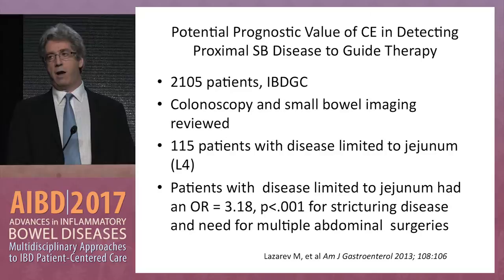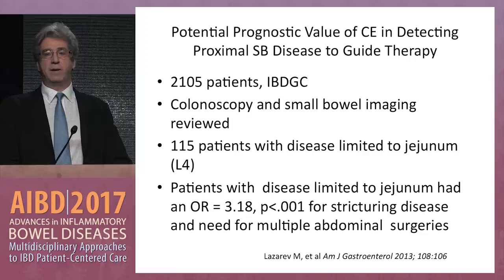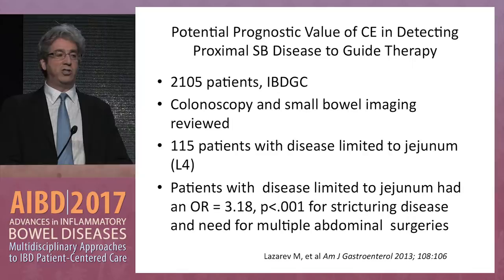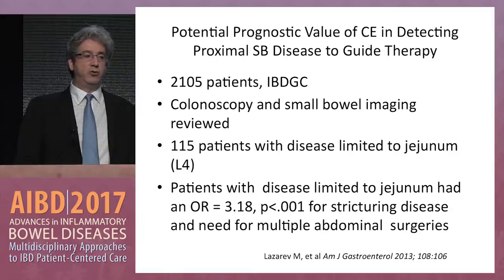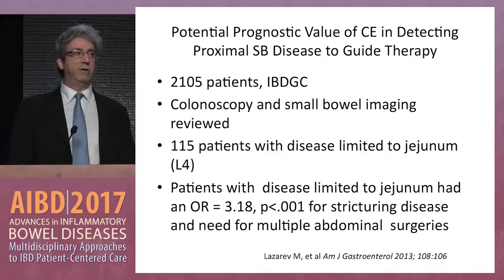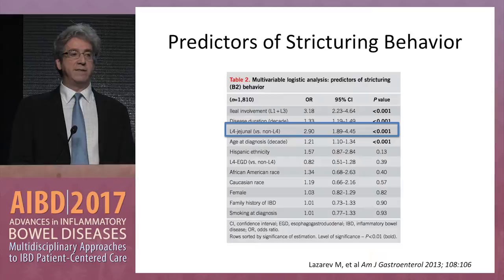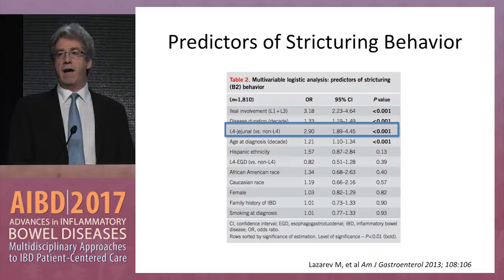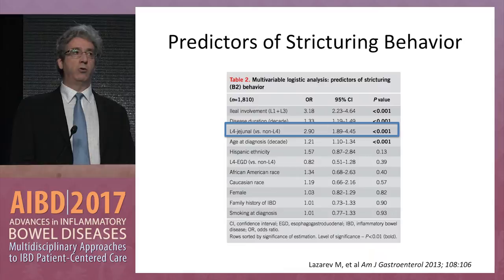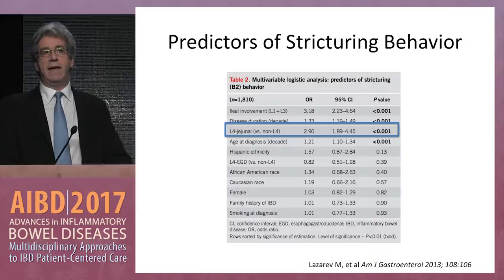This is from Mark Lazarev, now an important researcher at Johns Hopkins — from Steve Brandt's IBD Genetic Consortium database of over 2,000 patients. They had 115 patients who had disease limited to the jejunum, and they had a three-fold likelihood — this is purely jejunal disease without ileal disease. If you identify it, that patient has likely a more aggressive course. In terms of predictions of stricturing disease, besides early age of onset, this is the most telling — the worst prognosticator for who is going to get jejunal disease, stricturing disease, and ultimately surgery.